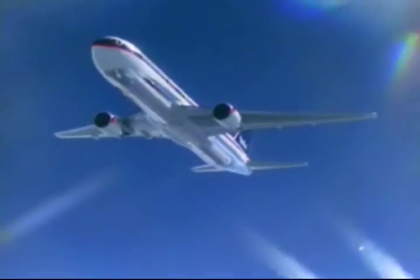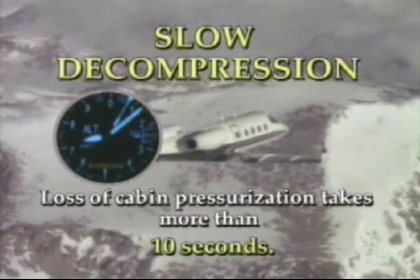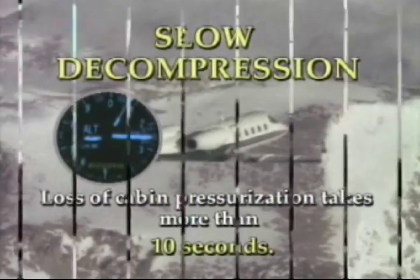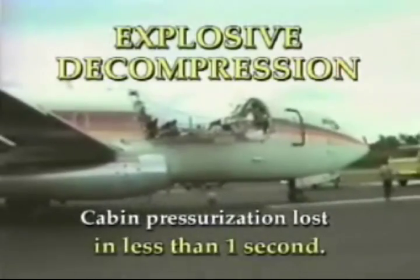While there are numerous advantages to having a pressurized flight, there is one major disadvantage: there is always the chance of losing pressurization. There are three major types of pressurization loss. Slow decompression — when the cabin loses pressurization during a time interval greater than 10 seconds; it is potentially the most dangerous since you may not be aware the cabin altitude is rising. Rapid decompression — a total loss of cabin pressurization within 1 to 10 seconds. Explosive decompression — cabin pressurization is lost in less than one second.